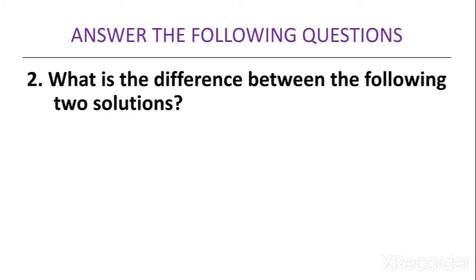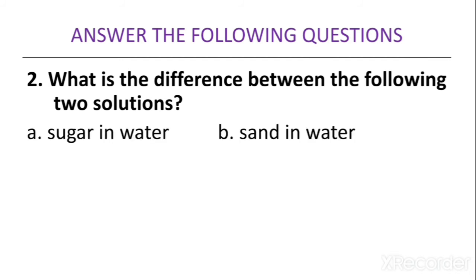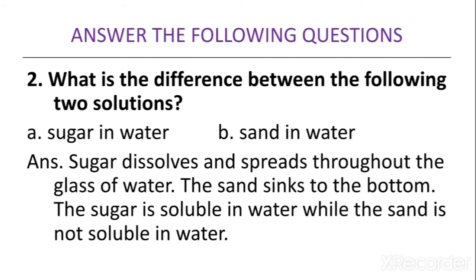Second question: what is the difference between the following two solutions — sugar in water, and sand in water? The obvious difference is sugar can dissolve in water but sand cannot. Sugar dissolves and spreads throughout the glass of water, whereas sand sinks to the bottom, because sugar is soluble in water and sand is not soluble in water.